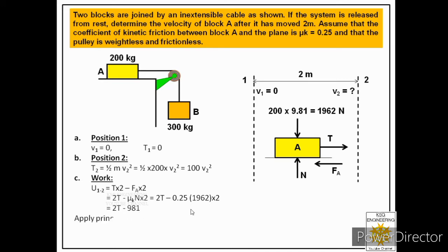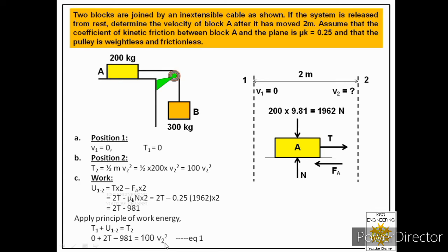Applying the work-energy principle — initial kinetic energy plus work done equals final kinetic energy — we get: 0 + (2T − 981) = 100v₂². This equation has two unknowns, v₂ and T, so we cannot solve it alone. We will call this Equation 1.